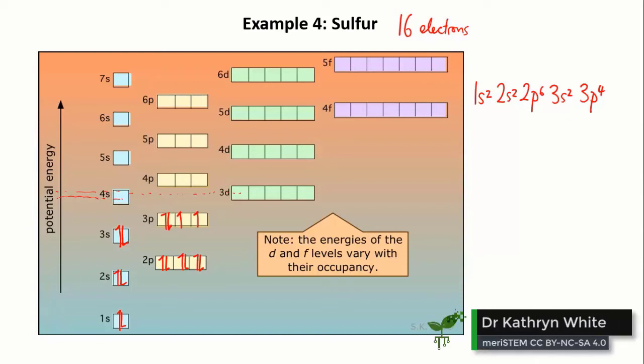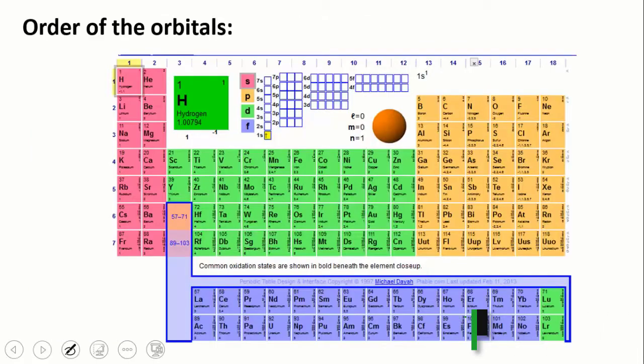The last thing that I want to go through with you is that one of the problems students often have is remembering the order of the orbitals when they're writing electron configurations. Happily, you can actually just read the order of the orbitals from the structure of the periodic table.